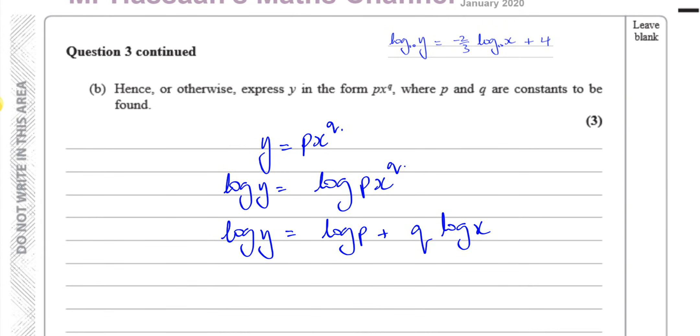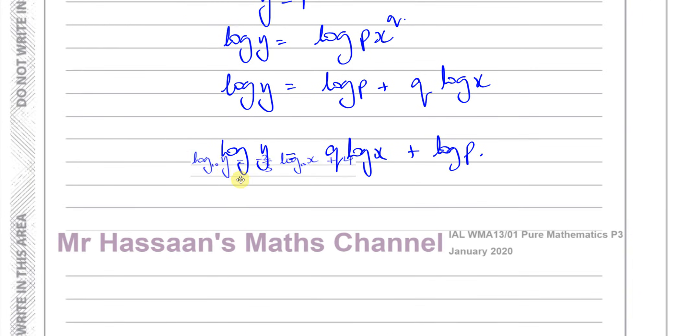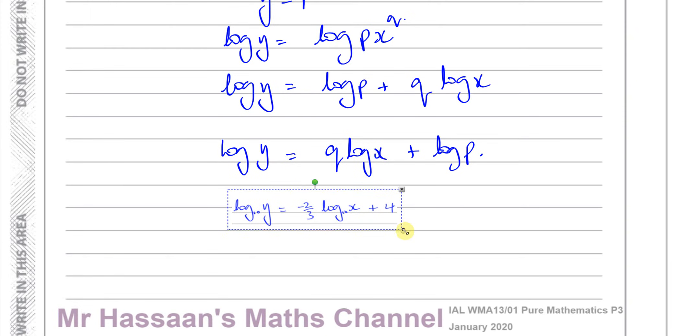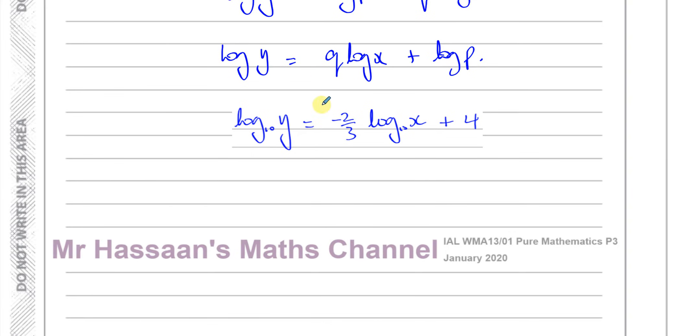So, now we can see that what we've got in our equation is log y equals minus 2 thirds log x. So what I can do is, just to make it clearer, I can write this first in this form: q log x plus log p. So, we've got in our what we found earlier is this. I'll just put it down here. This is what we found when we did our part A. So, if we compare them with each other, what we can see is the q is minus 2 thirds. And the log p is 4.